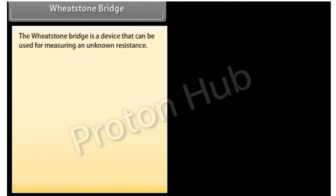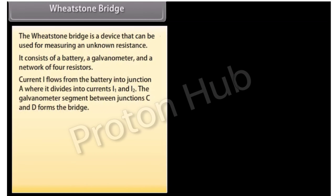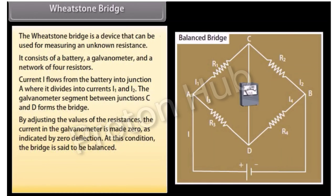The Wheatstone Bridge is a device used for measuring an unknown resistance. It consists of a battery, a galvanometer, and a network of four resistors. Current I flows from the battery into junction A where it divides into I1 and I2. The galvanometer segment between junctions C and D forms the bridge. By adjusting the resistances, the current in the galvanometer is made zero. At this balanced condition, R1/R2 = R3/R4.